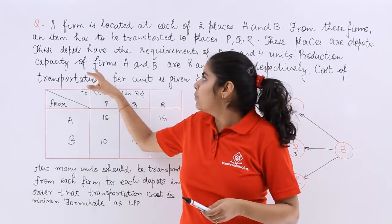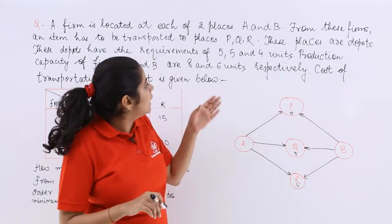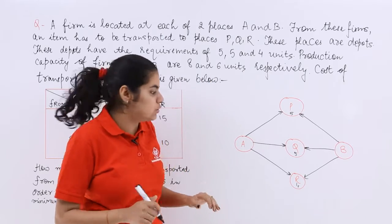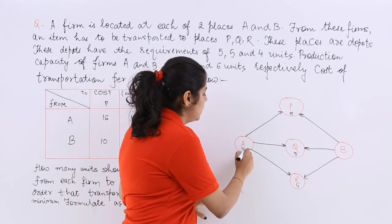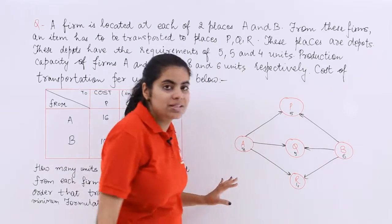Production capacity of the firms A and B are 8 and 6 units. So production capacity is 8 units and 6 units.